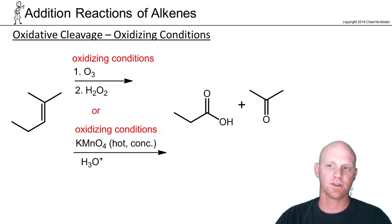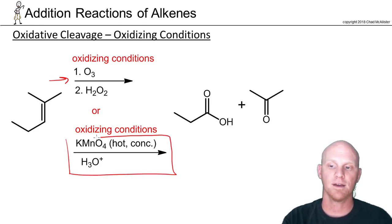I want to take one last look at oxidative cleavage under oxidizing conditions. And as we said a little bit ago, one way to accomplish this is with ozonolysis here, where O3, ozone in the first step, and then an oxidizing agent, hydrogen peroxide in the second step. But there is another option here, and that other option involves potassium permanganate.